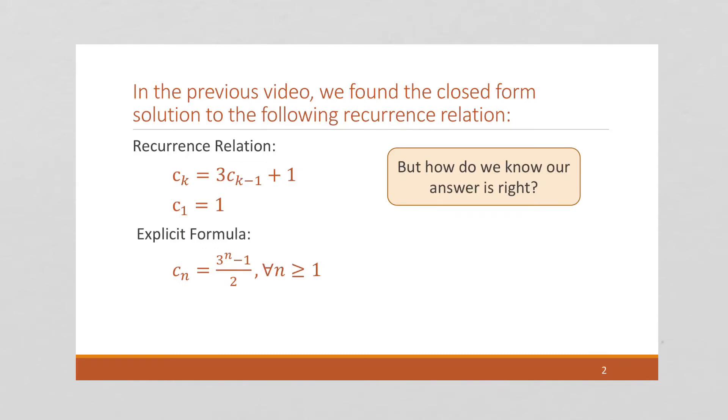In the previous video, we had this recurrence relation and we came up with this explicit formula. And remember, this was a little bit of a difficult problem. This was more difficult than the previous examples. So this was a difficult problem, and we need to know that our answer is correct. And to verify that our answer is correct, we need to prove it.